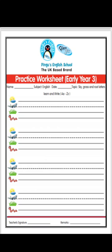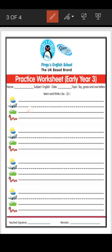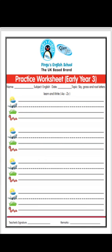We have a practice worksheet of Sky, Grass, and Root Letters. Now, Sky, Grass, and Root Letters are lowercase letters because all uppercase letters are Sky Letters. For example, letter A written in uppercase comes in the top three lines, so all uppercase letters are Sky Letters. That's why we have three categories — Grass, Sky, and Root — and we write these in lowercase.